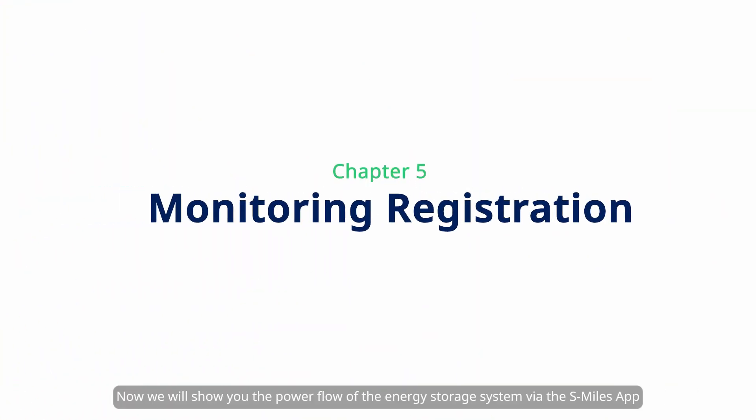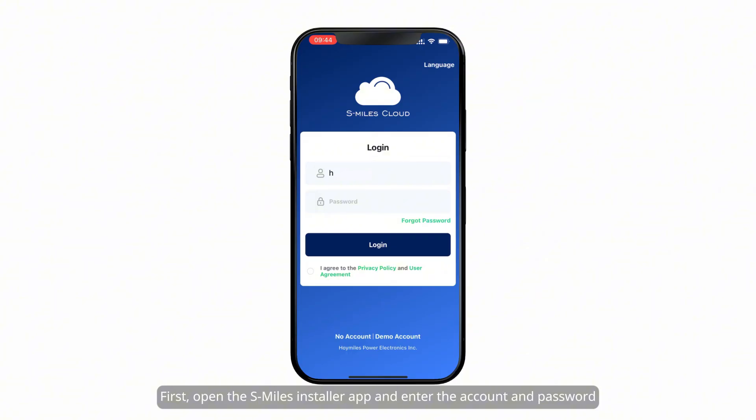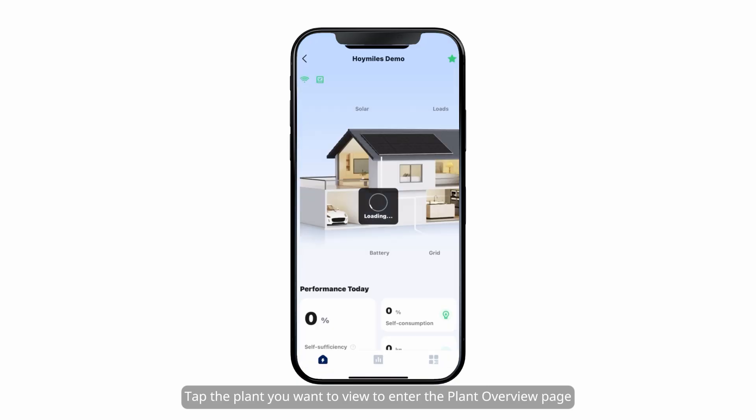Now, we will show you the power flow of the energy storage system via the S-Miles app. First, open the S-Miles installer app and enter the account and password. Tap the plant you want to view to enter the plant overview page.